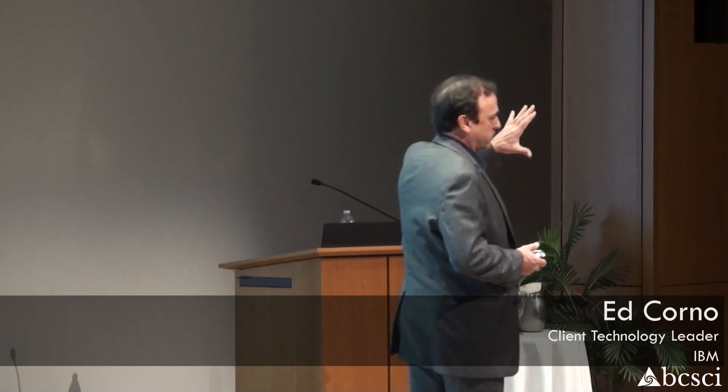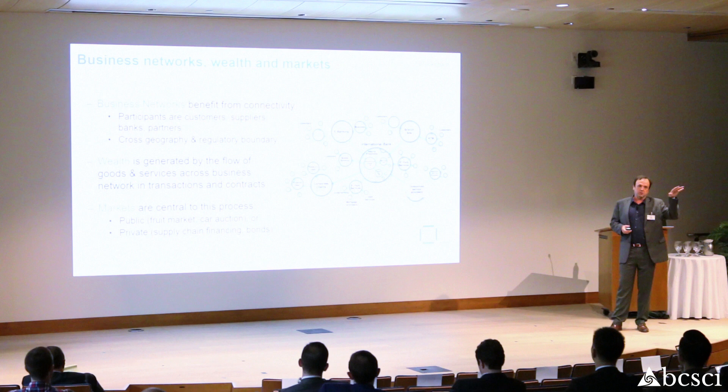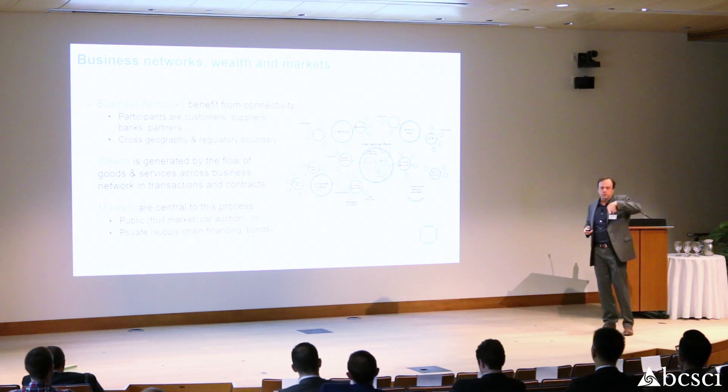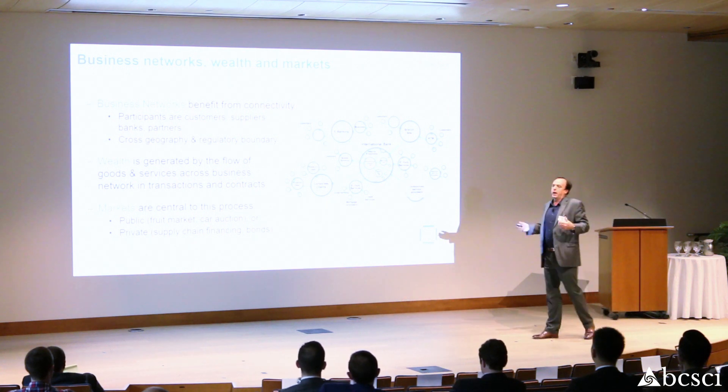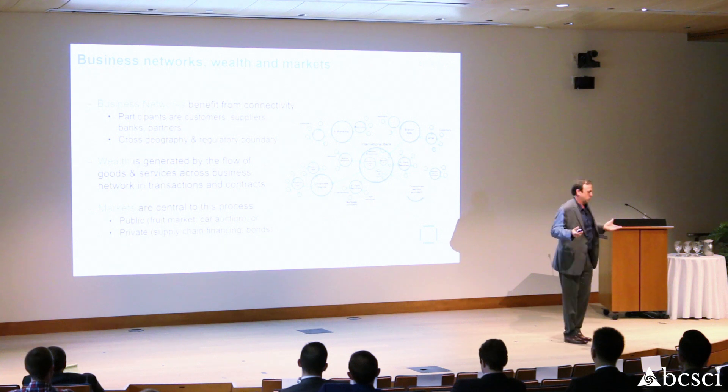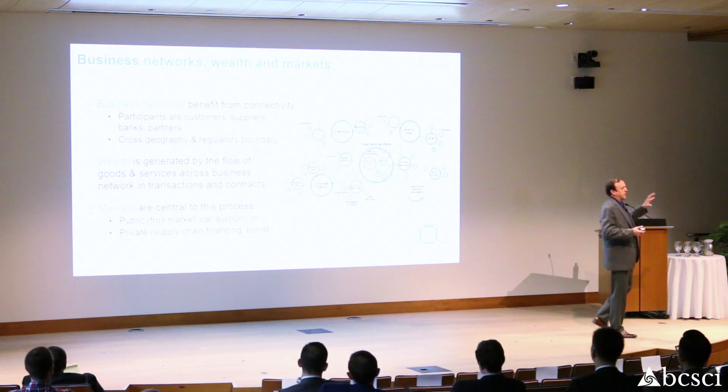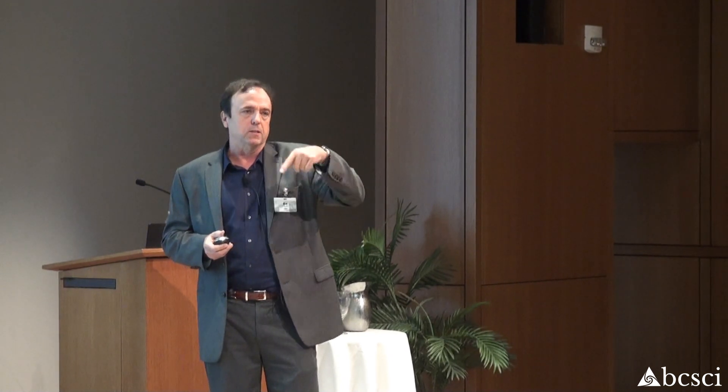Blockchain really is a shared ledger. There are three components to a shared ledger — it facilitates data being transformed and translated into your business network. It's called blockchain because that data is blocked and chained to the other distributed parts of the system.